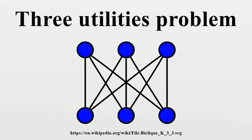K3-3 is toroidal, which means it can be embedded on a torus. In terms of the three-cottage problem, this means the problem can be solved by punching two holes through the plane and connecting them with a tube. This changes the topological properties of the surface, and using the tube we can connect the three cottages without crossing lines.